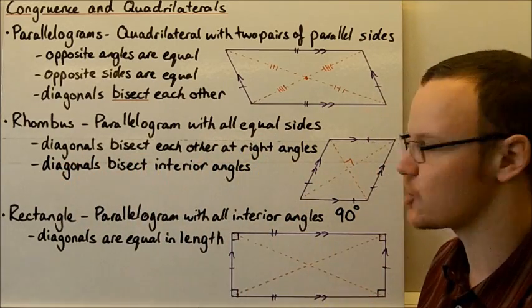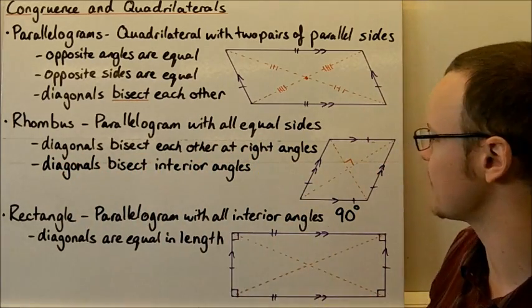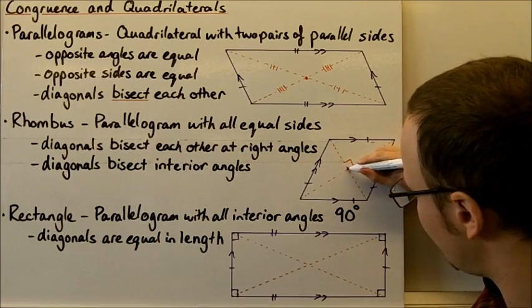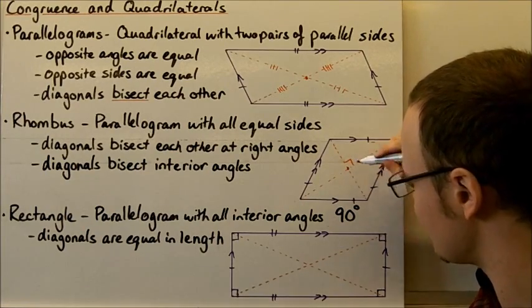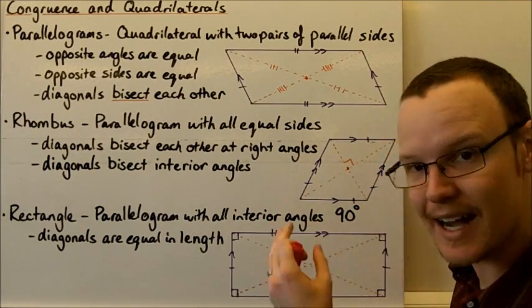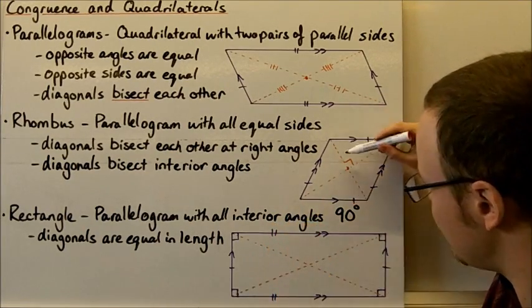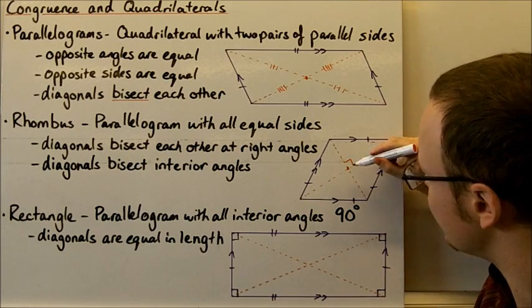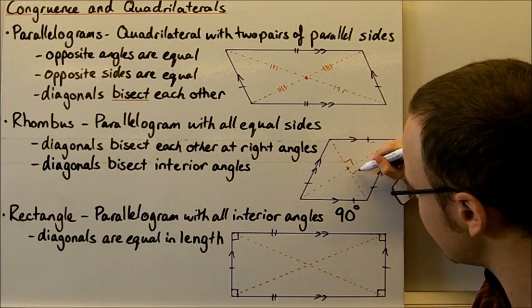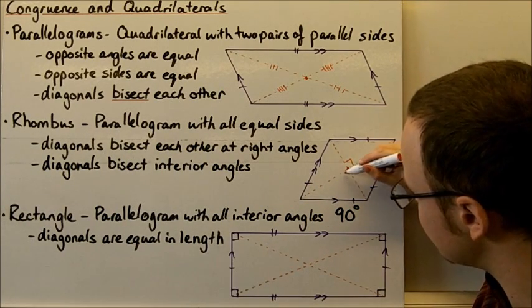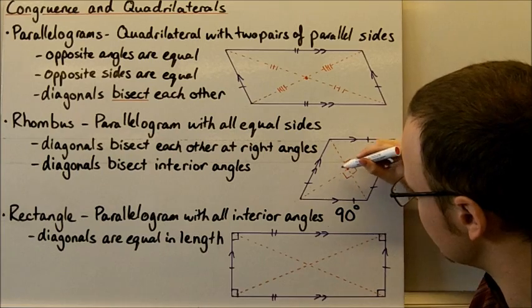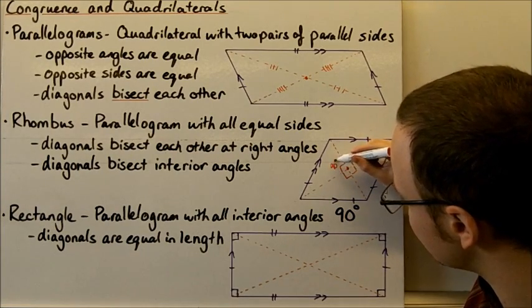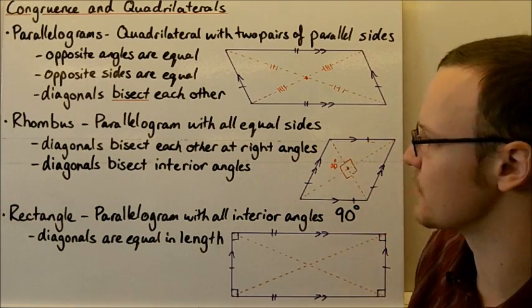The diagonals of a rhombus bisect each other at right angles. That means that at the bisection point — the cutting point where the diagonals cut both lines evenly in two, the point in the middle — each of the angles around there is a right angle, so each of those is 90 degrees.